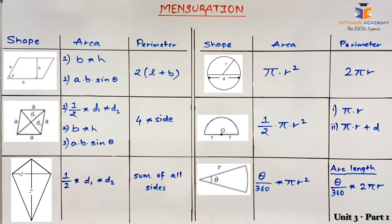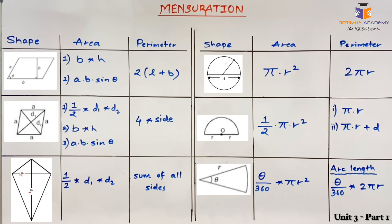Next we have sector. There is a special video on sector and arc length to be discussed further, but for now we will learn the formula. The area of a sector is: (θ / 360) × π × r², where r is the radius and θ is the angle of the sector. For arc length — the curved part of the sector — the formula is: (θ / 360) × 2πr.